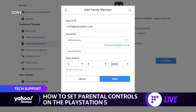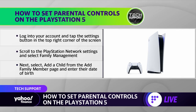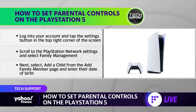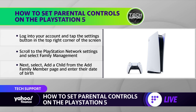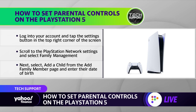Log into the account that you set up in the app. Then in the top right corner of the screen, press the Settings button, and from there you'll be able to find something called Family Management. Select that. You'll need to enter your password again — you're going to have to do this a million times. Then tap Set Up Now.